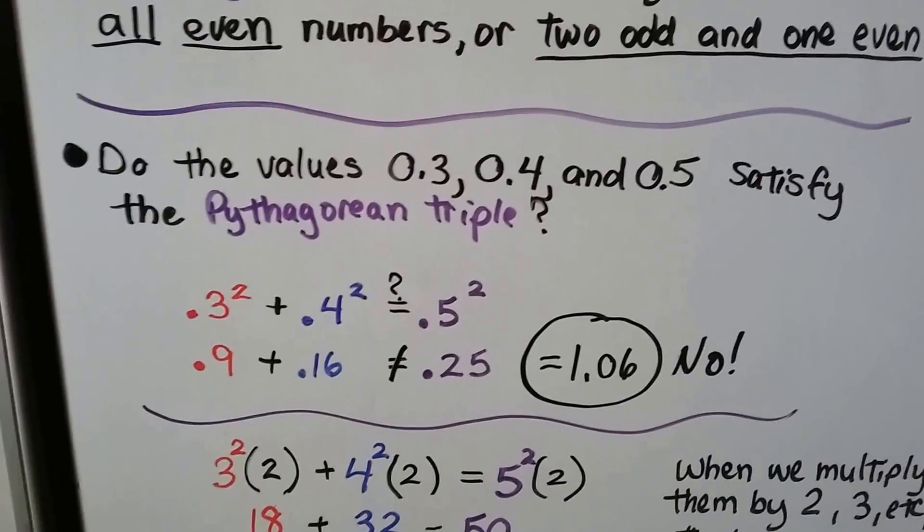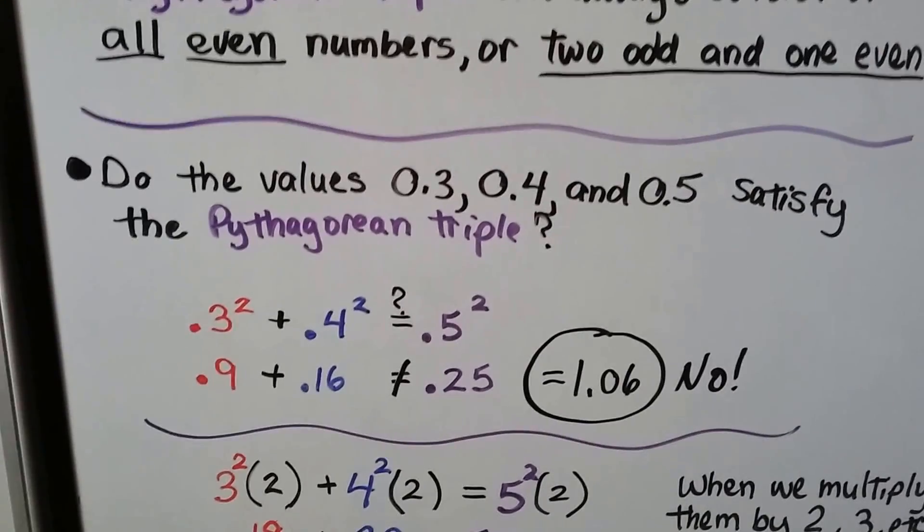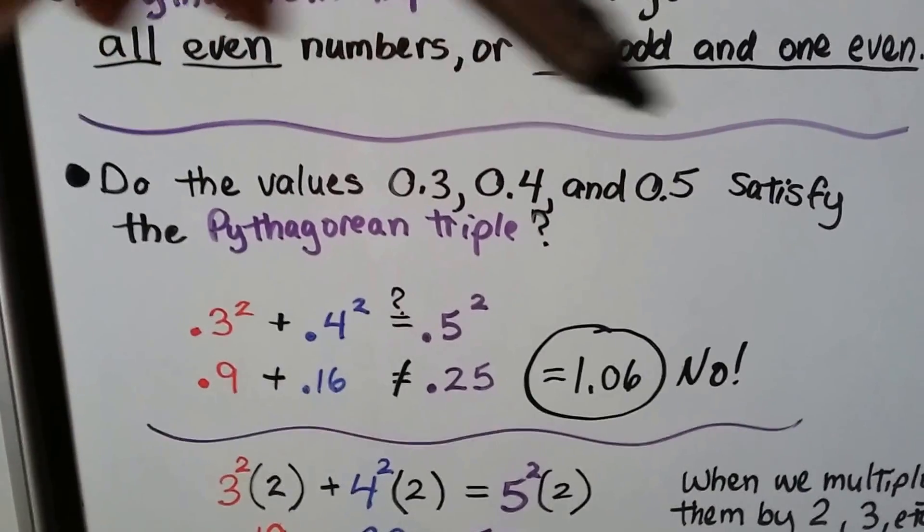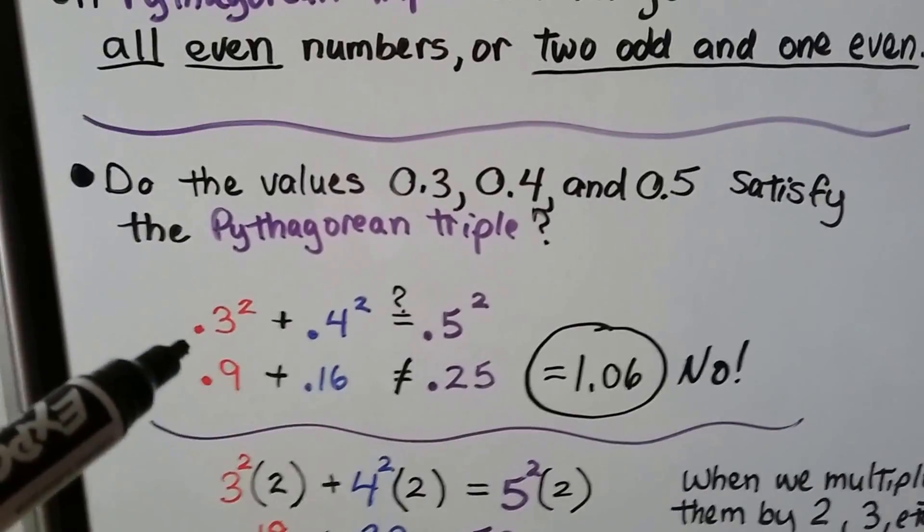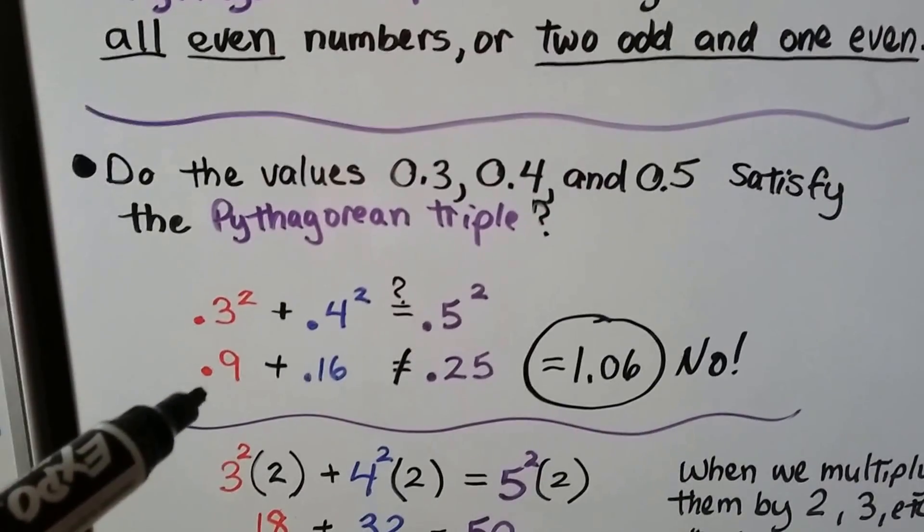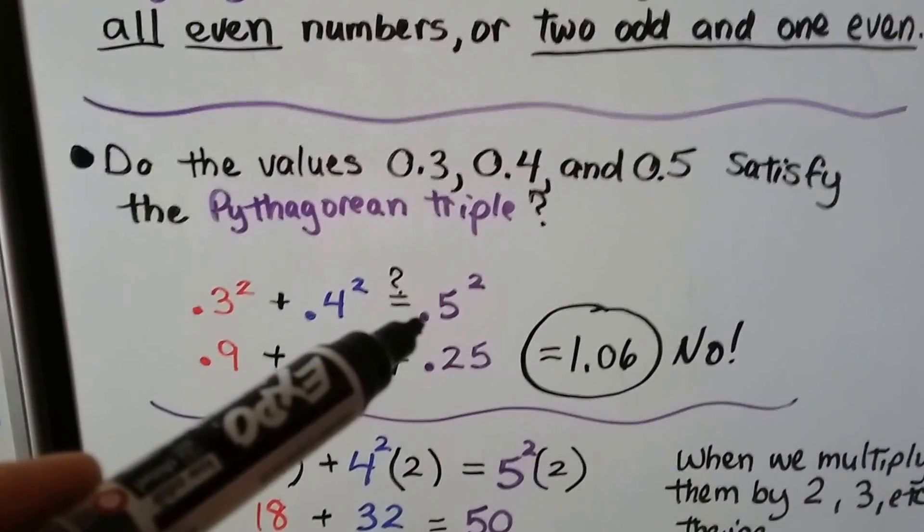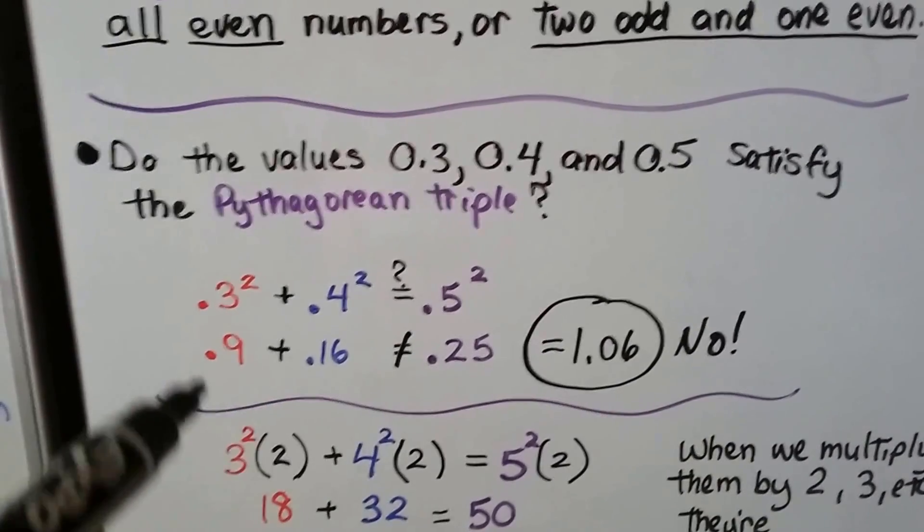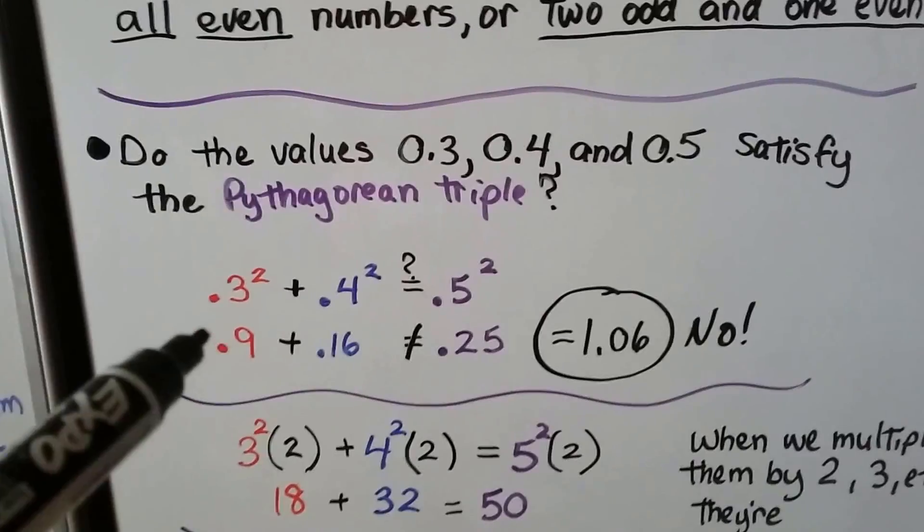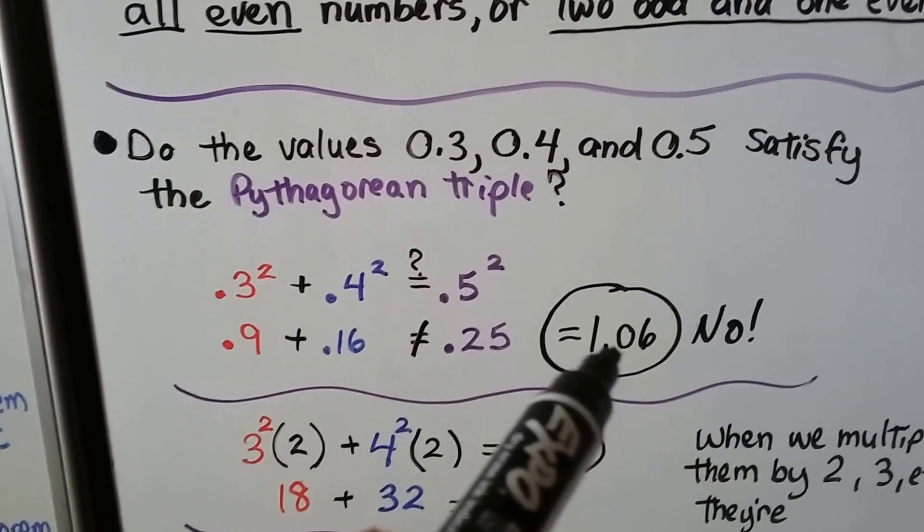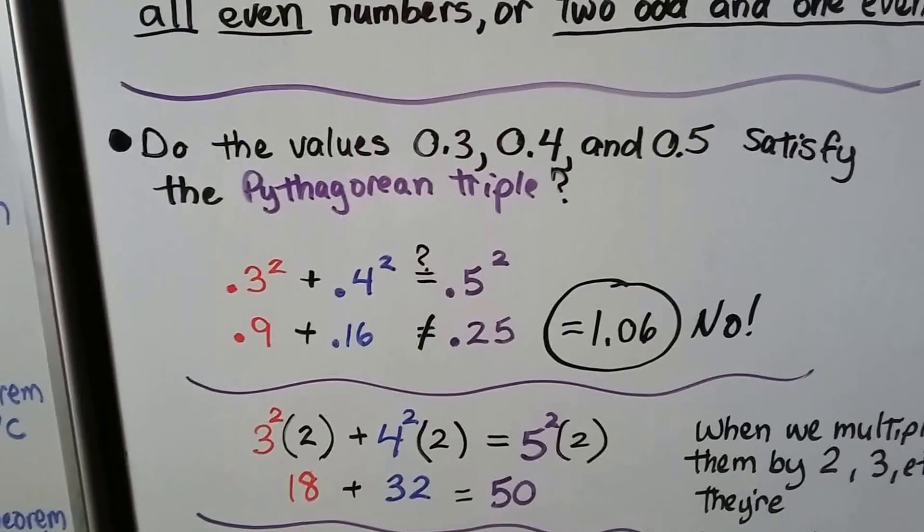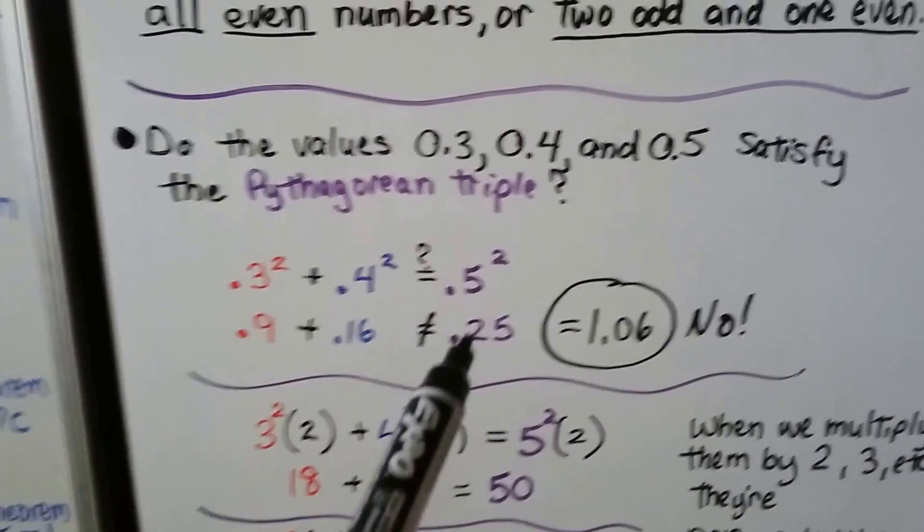And look at this one. Do the values 3 tenths, 4 tenths, and 5 tenths satisfy the Pythagorean triple? It's got a 3, 4, 5. Well, when we do 0.3 times 0.3, we get 0.9. 0.4 times 0.4 is 0.16. And 0.5 times 0.5 is 0.25. But when we add them up, 0.9 plus 0.16 is 1.06. So no, it didn't work. It doesn't equal 0.25.